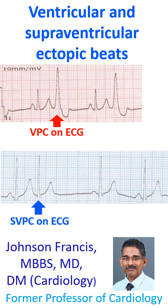Supraventricular ectopics are premature narrow QRS beats resembling the sinus beats. The P waves have a different morphology compared to the sinus beats, or may be absent in the case of junctional ectopics. P waves of supraventricular complexes may not always be visible, as some of them may be overlapping and hidden within the T wave.